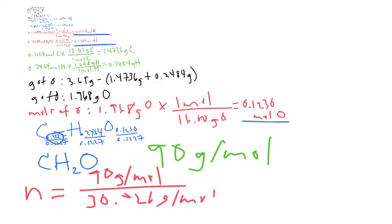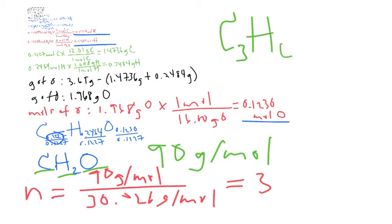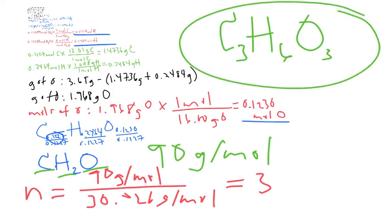So if you divide 90 by 30, you get n = 3. You then multiply each subscript in the empirical formula by 3, giving a molecular formula of C₃H₆O₃.